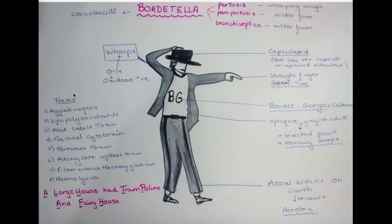Here is the list of toxins produced by Bordetella. The acronym used is 'a large house had trampoline and fairy house': A for agglutinogens, L for lipopolysaccharide, H for heat-labile toxin, T for tracheal cytotoxin, P for pertussis toxin, A for adenylate cyclase toxin, F for filamentous haemagglutinin, and H for hemolysin.